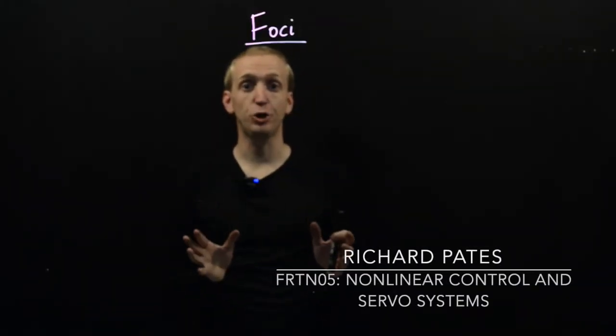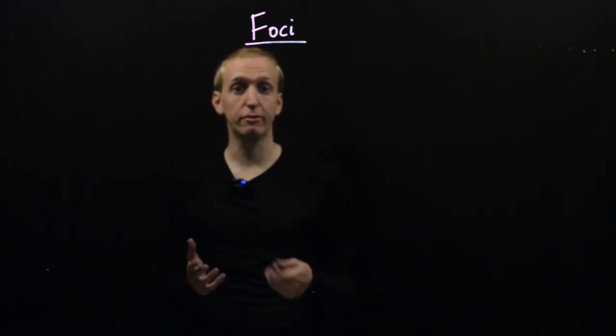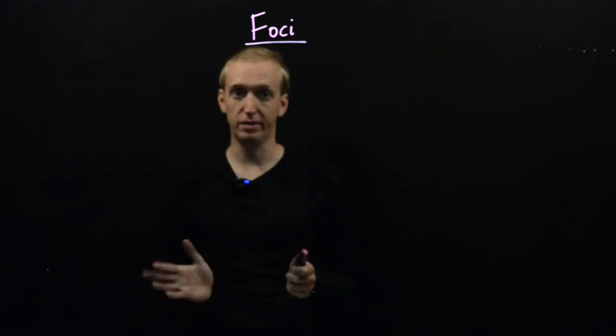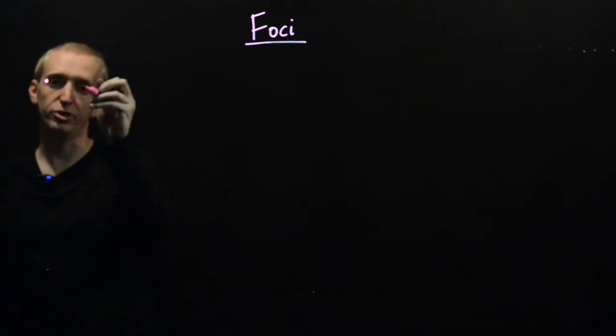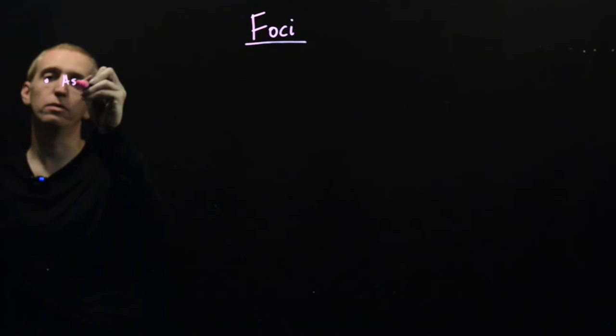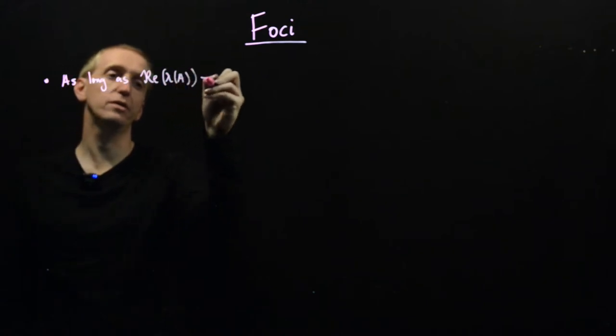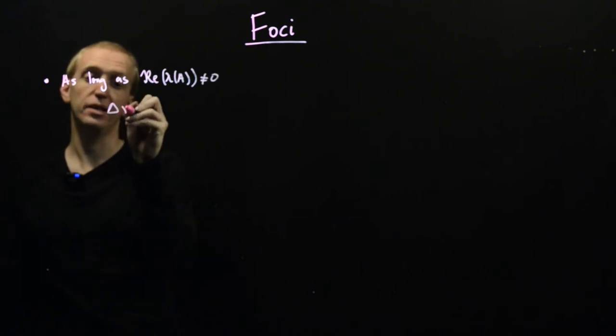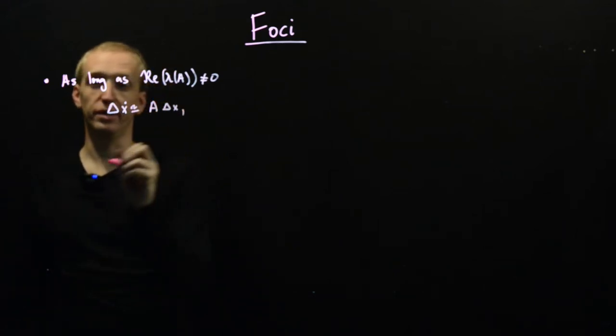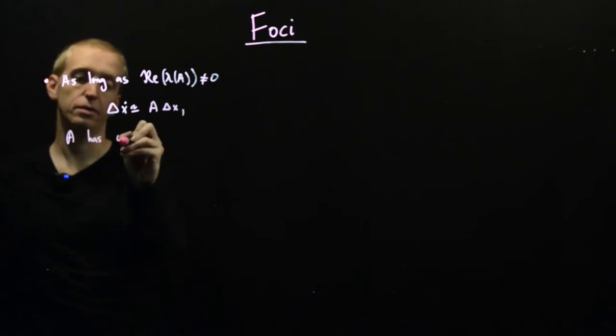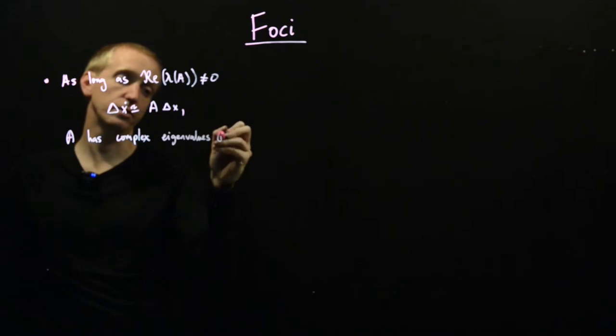Hello, we're now going to continue our classification of equilibrium points into various types of standard behavior by looking at what happens when our linearization, the A matrix in our linearization, has complex eigenvalues and eigenvectors. We're interested in the same approximation, so as long as the real part of the eigenvalues of our A matrix are not equal to zero, then delta x dot can be approximated by the linear solution.